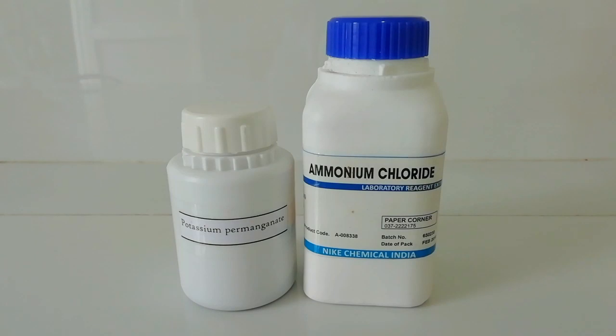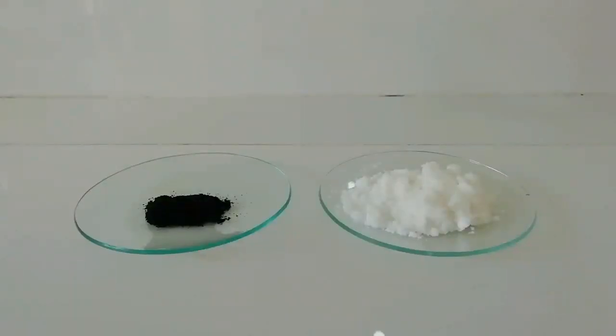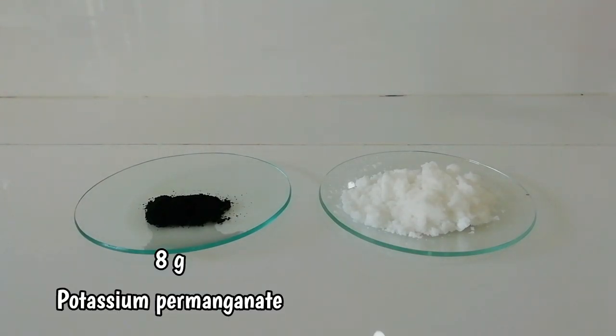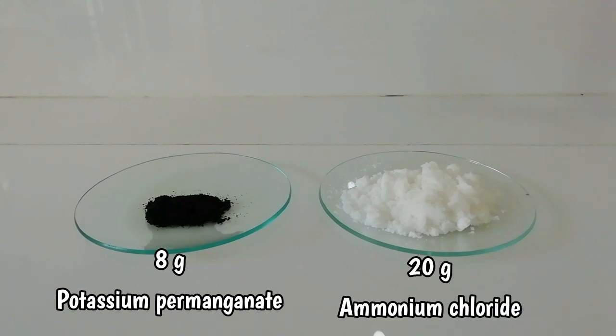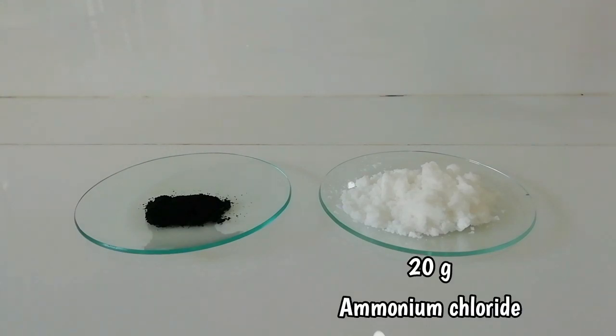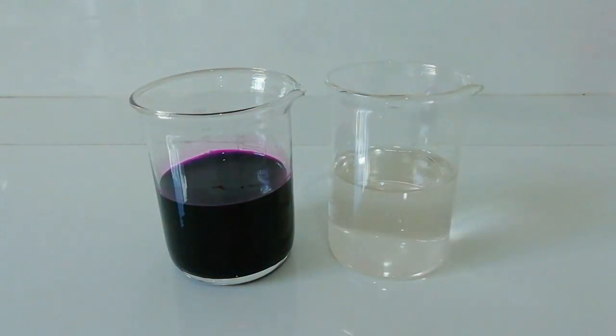For this experiment we need two chemicals: potassium permanganate and ammonium chloride. Here I have taken about 8 grams of potassium permanganate and 20 grams of ammonium chloride.